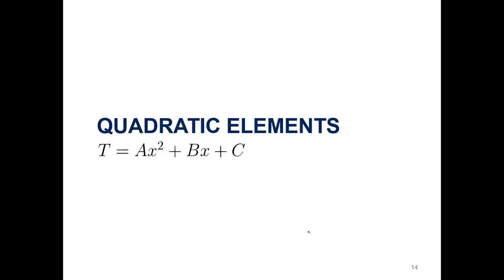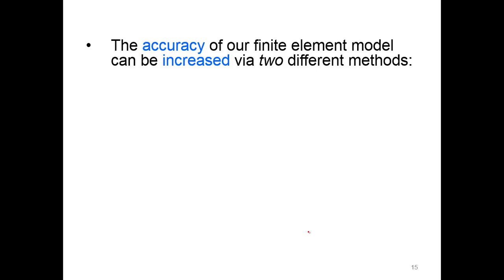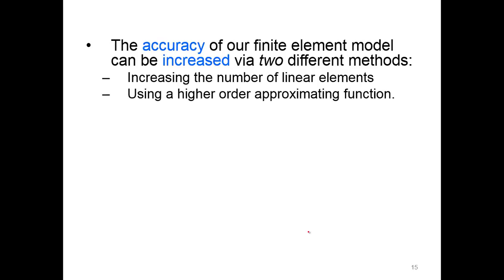Let's move now to quadratic elements. We just looked at linear elements, moving on to quadratic elements, ax squared plus bx plus c. The accuracy now of our finite element model can be increased via two different methods. We can increase the number of linear elements, or elements in general, but we can also use a higher order approximating function. Instead of a linear element, we can use a quadratic element.